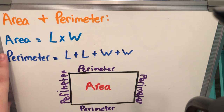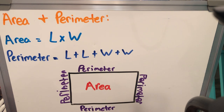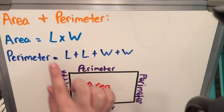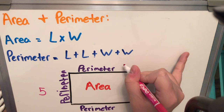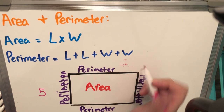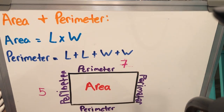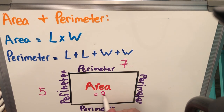I have some formulas down — the formula for area and perimeter. Area is the total amount on the inside of the shape that we are trying to figure out. I have a rectangle here, so I'm going to try to find the area of the rectangle. How to find that is by multiplying the length times the width. So if I had a width of five and a length of seven, I would multiply that to get a total area of 35.